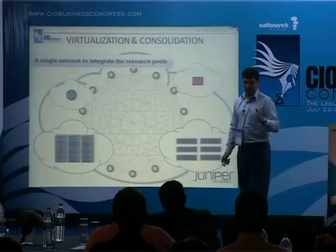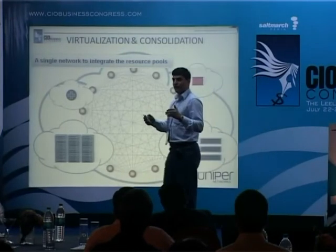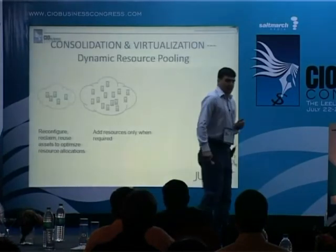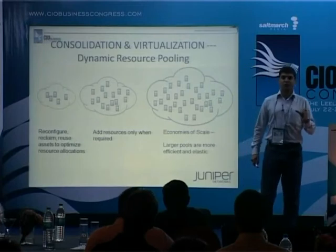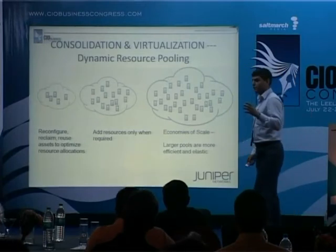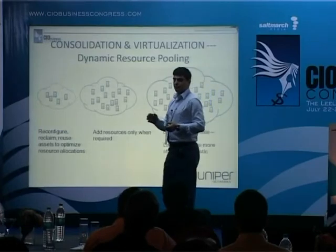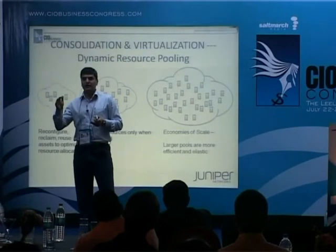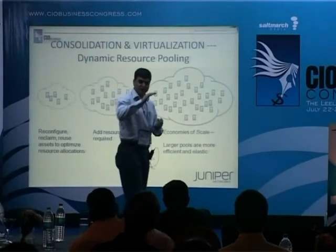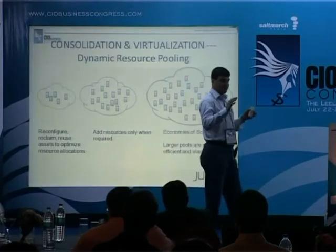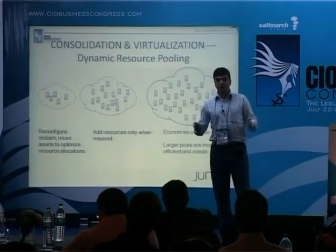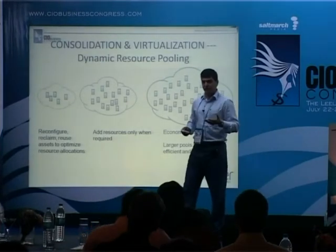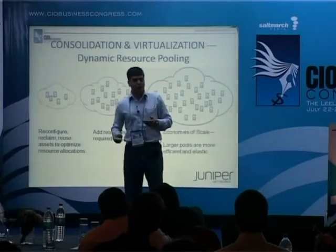It made sense to use a pool of servers for a large group of users, where utilization goes up to 60–70%. The same happened with storage — consolidated and finally virtualized. This can also happen with other services in the data center, such as network and security services. It will be a single network integrating the resource pool. Dynamic resource pooling is key, and resource utilization has to be elastic because changes are dynamic. Larger pools will be more efficient and accommodate more elasticity.